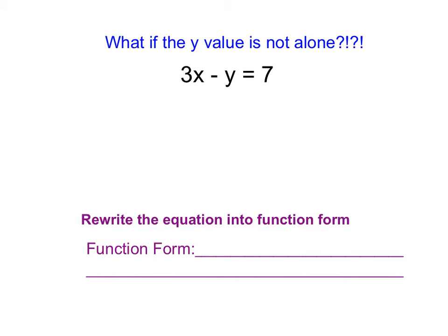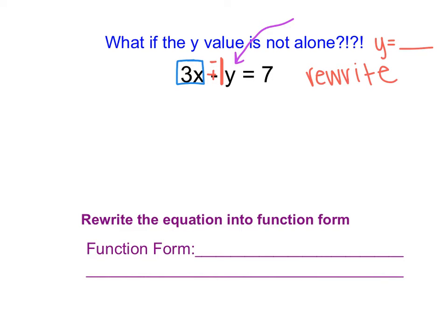Before we graph more linear equations, we need to talk about what to do if our y value is not alone — if our equation isn't written in y equals form. If y is not alone, we have to rewrite the equation. For example, with 3x plus negative 1y equals 7, my goal is to get the y value completely by itself. I start by subtracting 3x from each side, so I'm left with negative 1y equals 7 plus negative 3x.